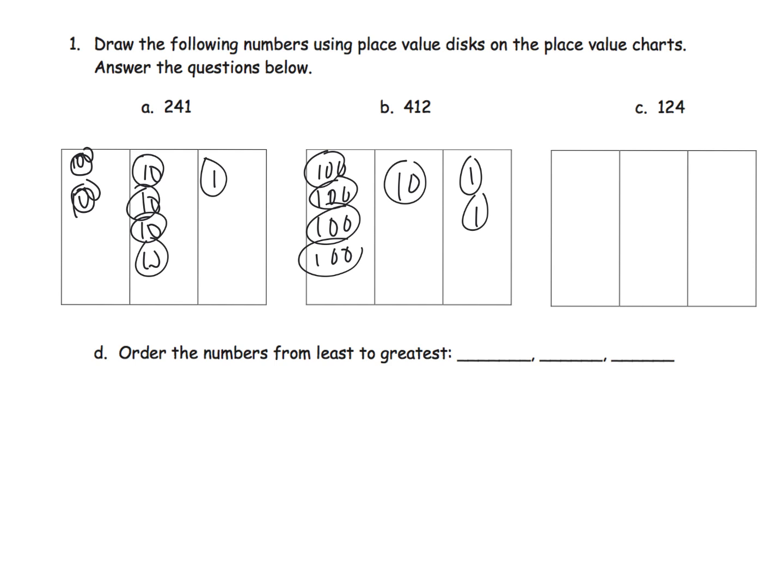And then lastly, 124. What is that going to look like? Well, that's going to have 100. It's going to have 10 and 10, and then it's going to have four ones.